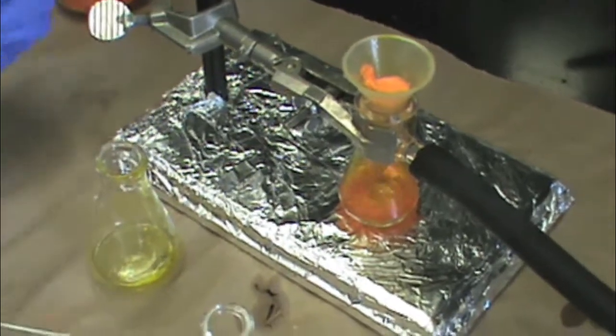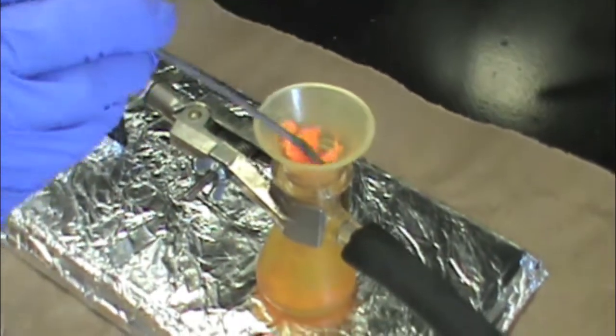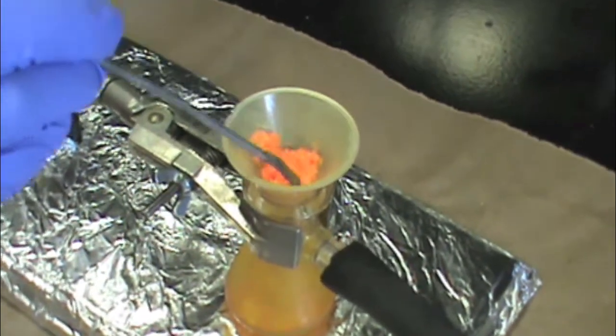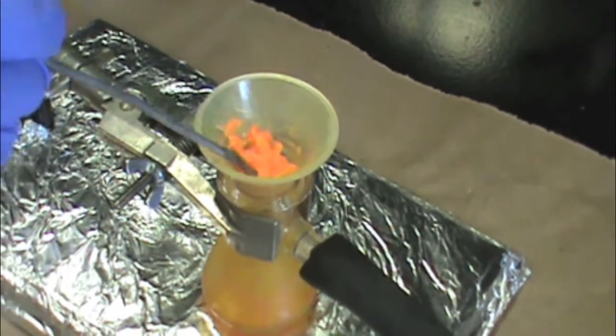Once you have transferred everything from your recrystallization, you can use a microspoon to move your crystals around in the Hirsch funnel and make sure that they dry well.